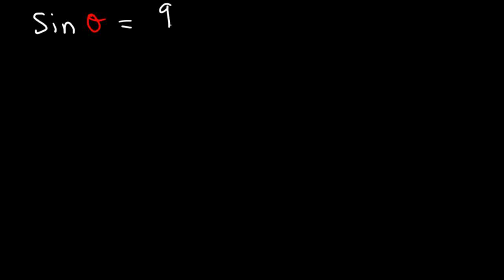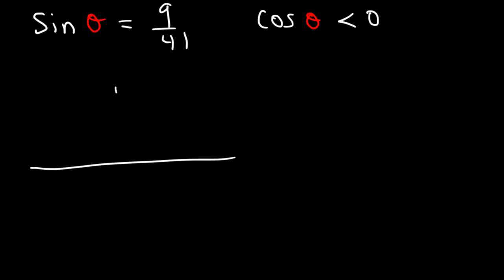Let's say that sine of theta is equal to 9 over 41, and that cosine theta is less than 0. Find the values of the other remaining trigonometric functions — these 5 remaining. Now first, we need to determine the quadrant. Sine is equal to positive 9 over 41, so sine is positive in quadrants 1 and 2.